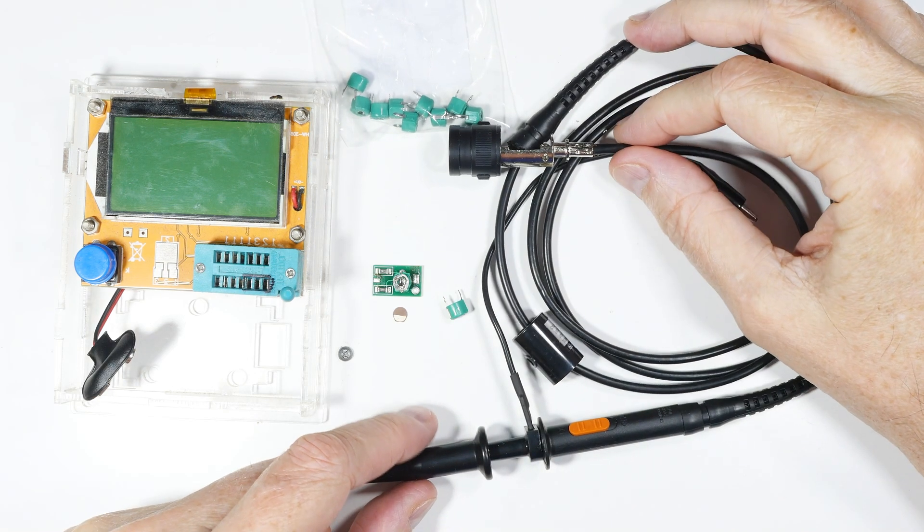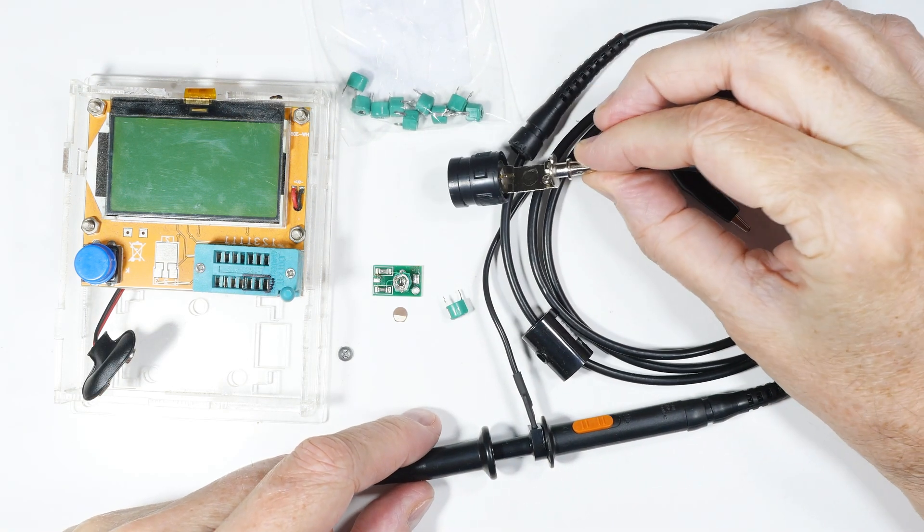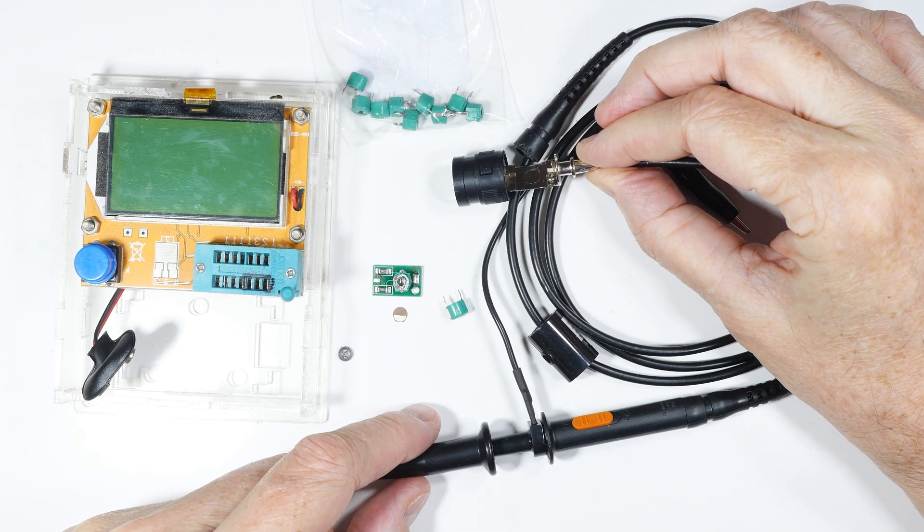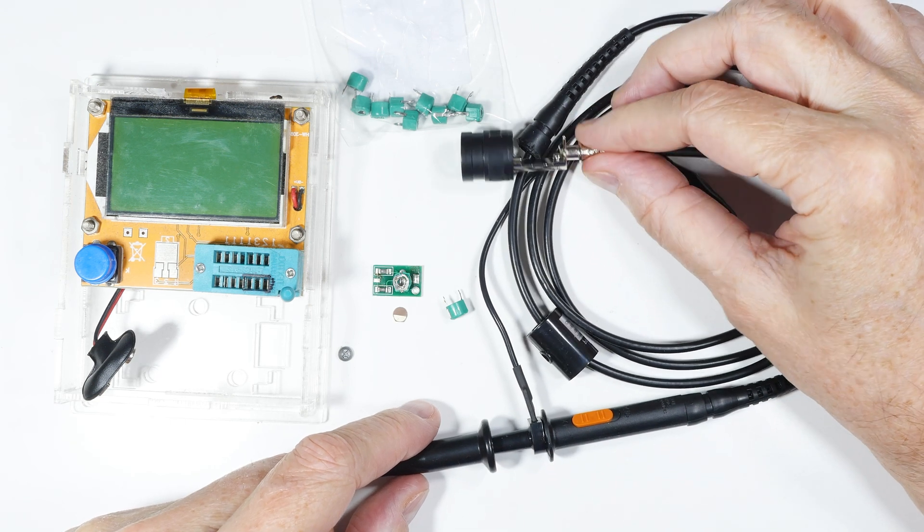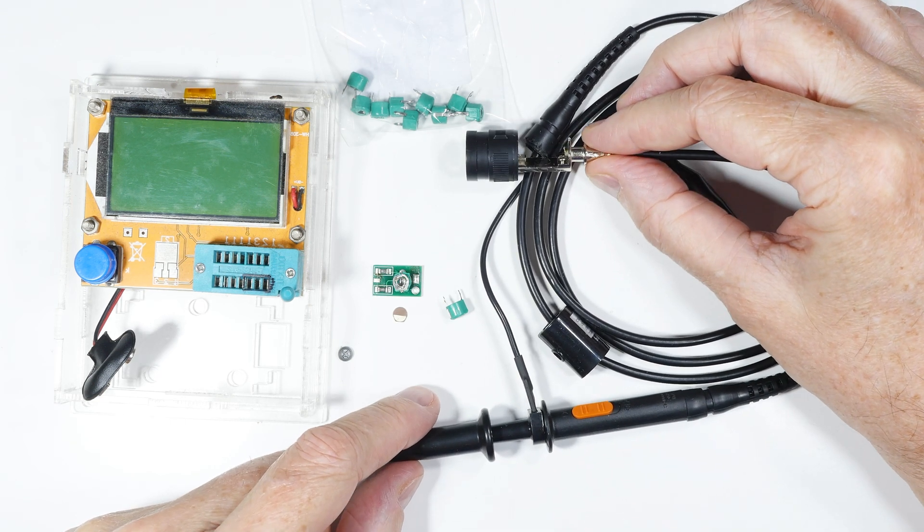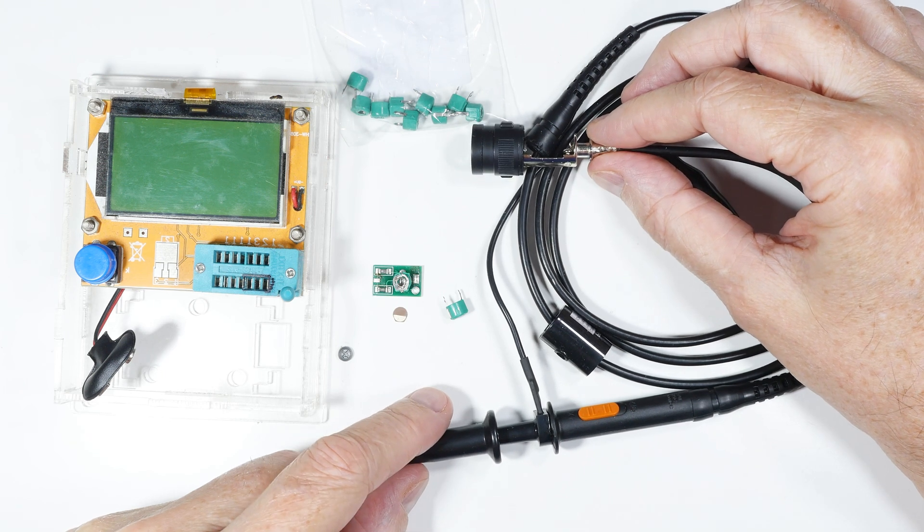I bought a four probe oscilloscope a while back and two of the probes came, well, they weren't any good. They wouldn't adjust and so a little bit of reasoning and I figured out it was probably the trimmer capacitor.